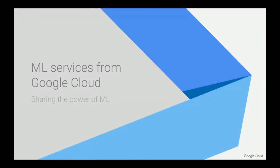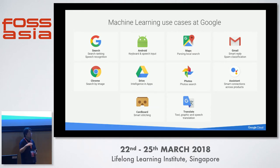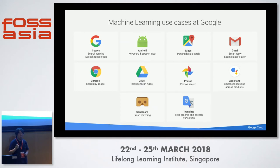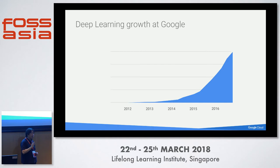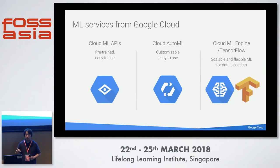Google has been using this technology to implement many different Google services. If you use Google Search, you are using deep learning from Google every day, because in 2015 we introduced deep learning algorithms for ranking Google search results. We have been using deep learning in over 100 production projects inside Google. So it's not a hype or buzzword anymore — deep learning is a proven, production-quality technology and a very important part of Google services already.